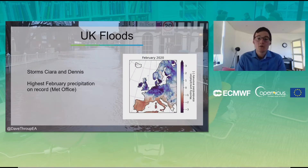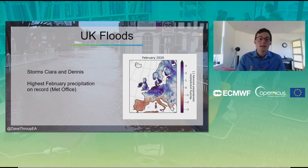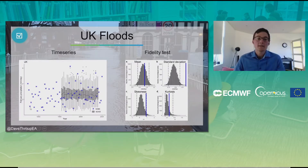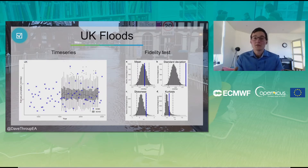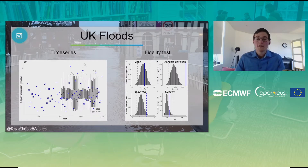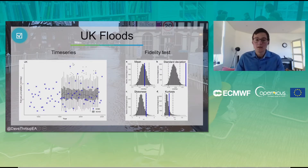For the UK floods example: storms Ciara and Dennis precipitated a lot of water over Northwest Europe and it was said to be the highest February precipitation on record. When we look at the data, we show February average precipitation for ERA5 — the observed in blue crosses — and SEAS5, the model, in box plots. This shows that the observations are just one realization of what could occur, whereas within SEAS5 we have many realizations that could have possibly occurred. The extremes in the upper tail already show a possible application where you can assess many extreme events of the same magnitude.